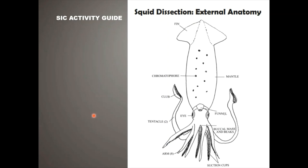Squid are super easy to find — you don't have to order them through a special supply company. Find your local Asian market and buy them. Sometimes they're fresh in a cooler section, or you can buy small frozen boxes of a couple dozen. You just want to make sure you buy uncleaned — where they still have their guts. Whole squid, not cleaned out. They can be around six inches long, perfect size for a pair of students.